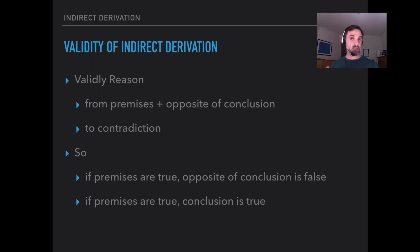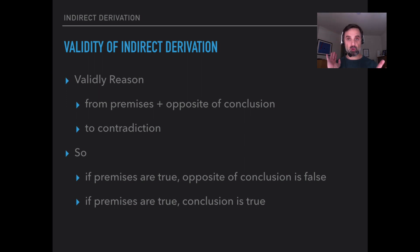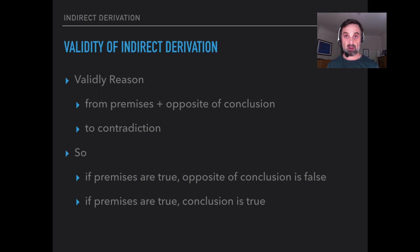To summarize: we reason from the premises plus the opposite of the conclusion to a contradiction. That tells us that the premises plus the negation of the conclusion can't all be true. So if the premises are true, then the opposite of the conclusion is false, which means the conclusion is true, and that means the argument is valid. That's why indirect derivation works. We'll look at how it works in the formal system in the next video.